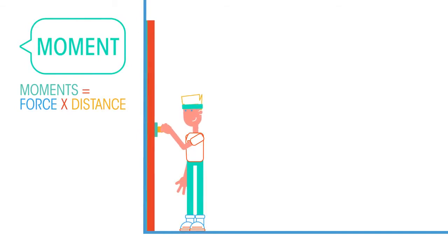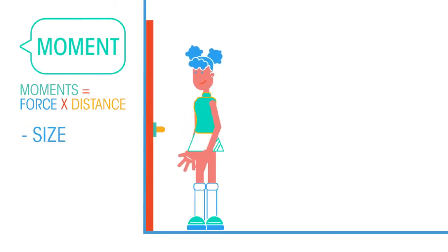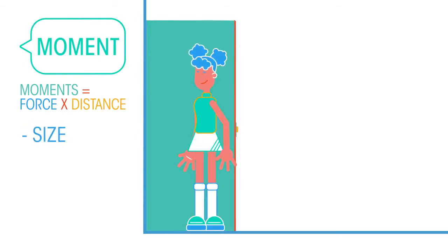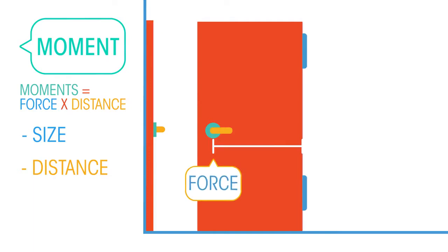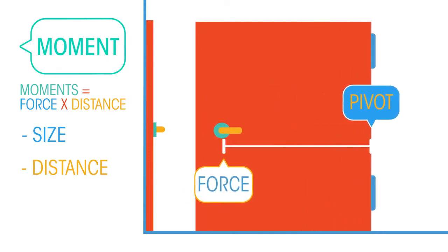The moment of a force depends on the size of the force and the distance between the force and the pivot. The greater the distance between the force and the pivot, the greater the moment of the force.